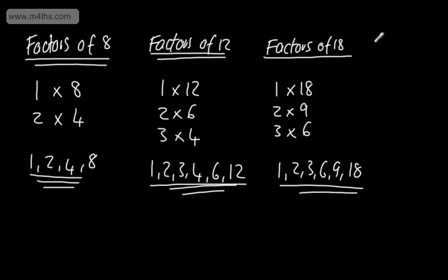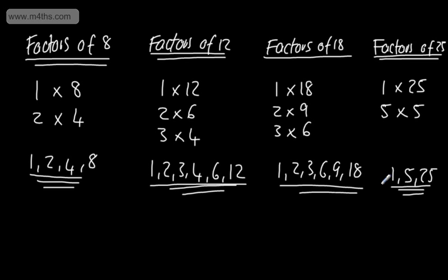If we look now at the factors of 25. I could have now 1 times by 25. I can't have 2 multiplied by any number, or if you like, we can't divide 25 by 2 to get a whole number. We can't do that with 3. We can't do it with 4. We can do it with 5. And that would be 5 times by 5. We can see that we're coming back on ourselves now. So we can write 1, 5 and 25 are the factors now of 25.